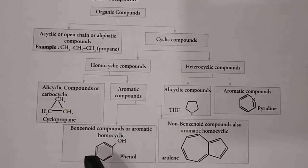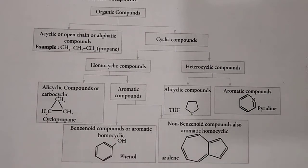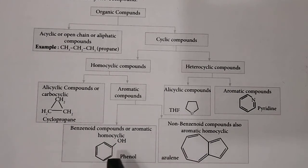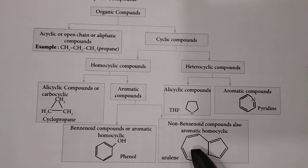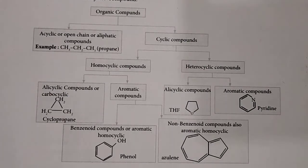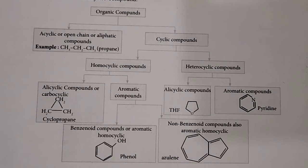Aromatic compounds are subdivided into benzenoid and non-benzenoid compounds. Benzenoid means the compound contains a benzene ring — for example, phenol has a benzene ring with an OH group. Non-benzenoid aromatic compounds do not contain a benzene ring. For example, azulene is a 5-membered ring fused with a 7-membered ring, and it is a non-benzenoid aromatic compound. This is a common exam question: give one example of a non-benzenoid compound and draw its structure — the answer is azulene.